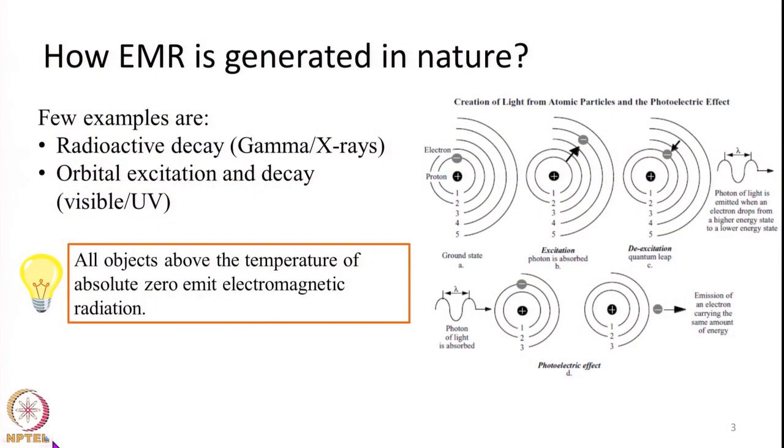This class we will be continuing ahead with how electromagnetic radiation is being generated in nature and how we are going to use it for remote sensing purposes. In nature, EMR is produced by various processes and mechanisms. For example, when we switch on a bulb inside our living room we are converting electrical energy into light energy, and light energy is nothing but electromagnetic radiation.